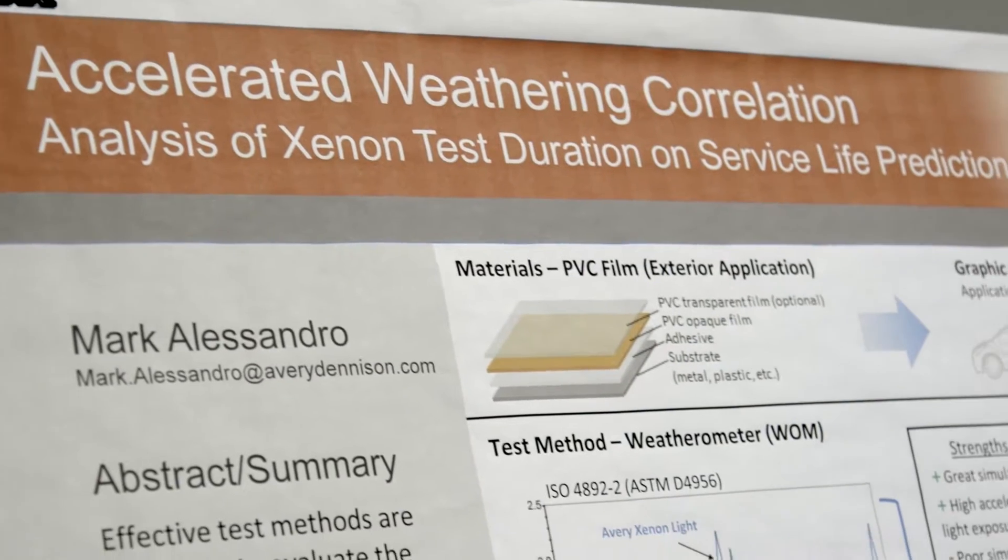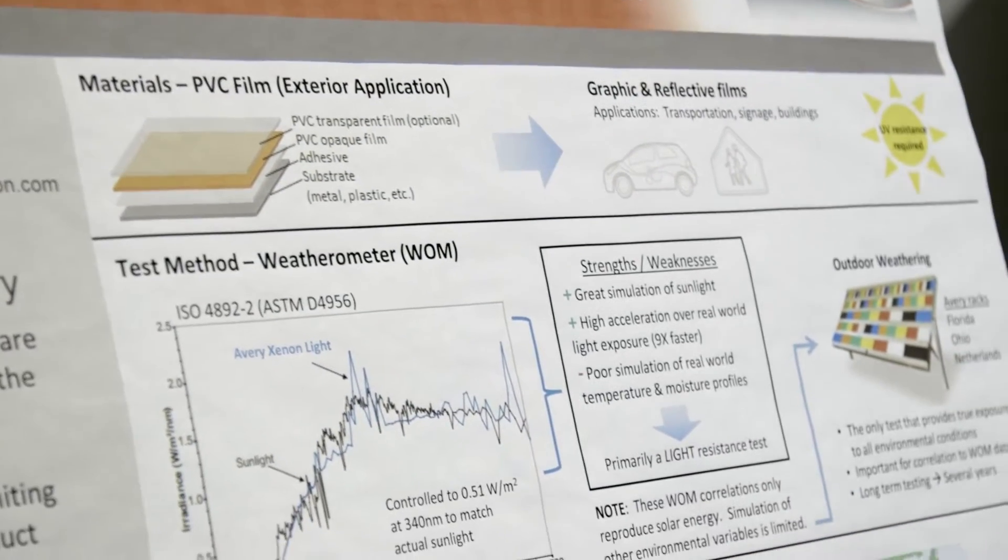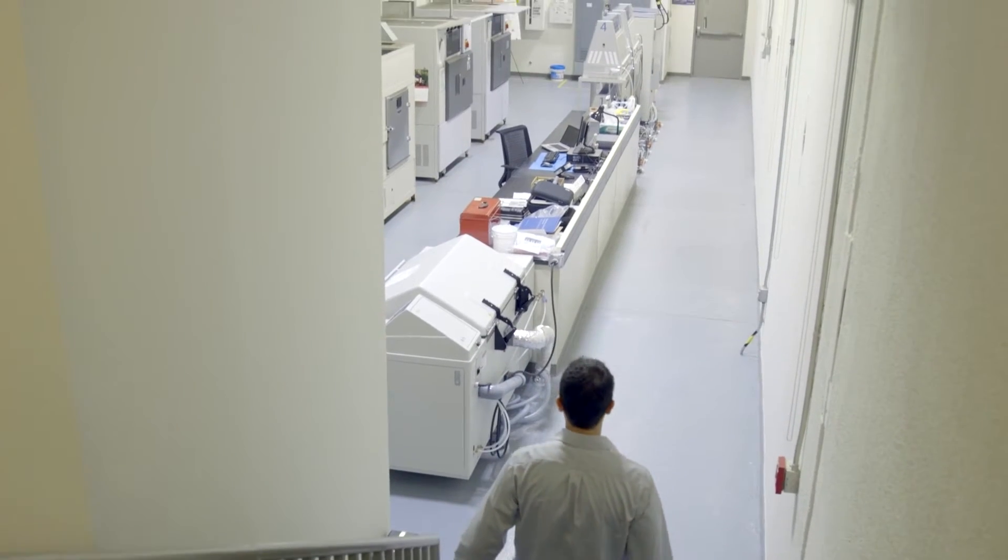Accelerated Weathering is a means to evaluate the durability of materials in an accelerated fashion. We intensify the light, moisture, and temperature—the elements that these materials would see in real life—in a lab condition to simulate many years in a few short months. The Durability and Accelerated Weathering Lab